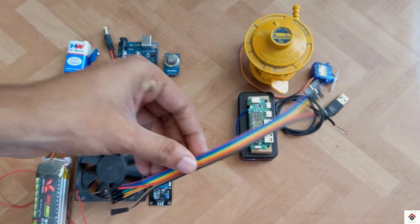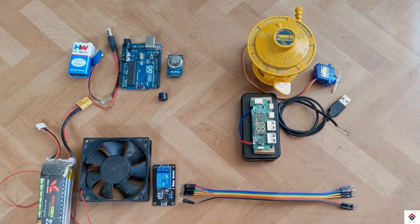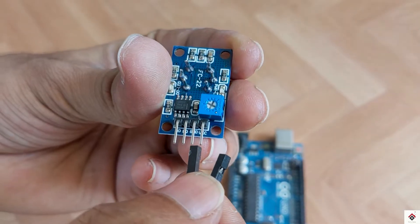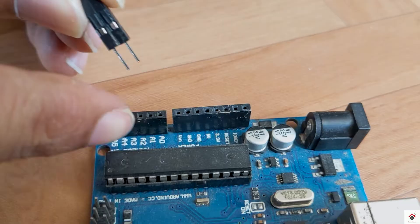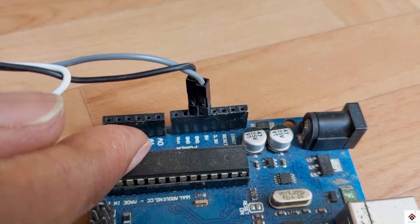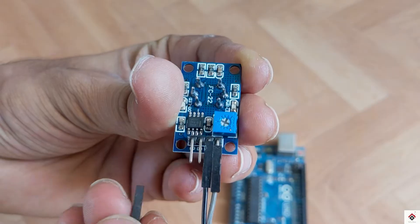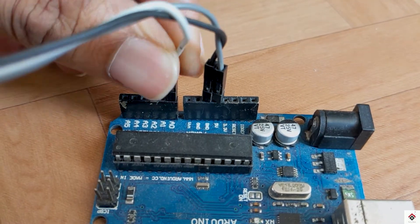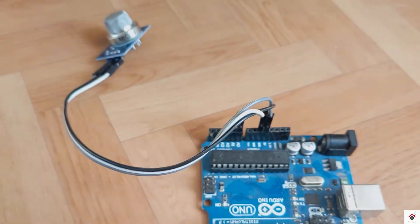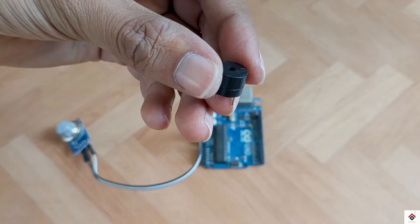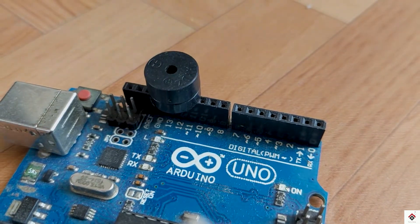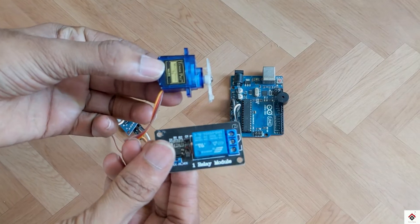Moving on to the connections, first I'll connect the ground and VCC of the MQ4 sensor to Arduino 5-volt and ground. The analog output from the sensor goes to Arduino analog pin A0. The positive and negative terminal of the buzzer goes to Arduino digital pin 11 and ground.